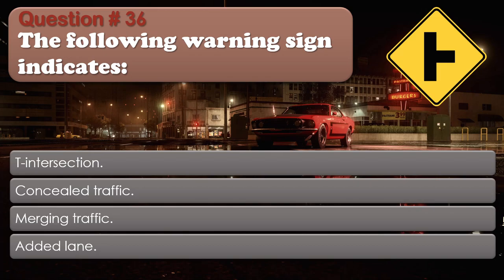Question number 36. The following warning sign indicates: T-intersection. Concealed traffic. Merging traffic. Added lane. The correct answer is: T-intersection.